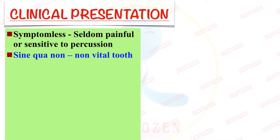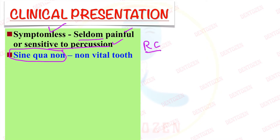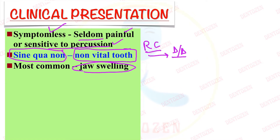Regarding clinical presentation, the pulp is dead, so it is usually symptomless — seldom painful or sensitive to percussion. An important point (a sine qua non) is the presence of a non-vital tooth; a non-vital tooth must be present to diagnose a radicular cyst. This is one point which helps differentiate it from all other lesions occurring in the periapical location.